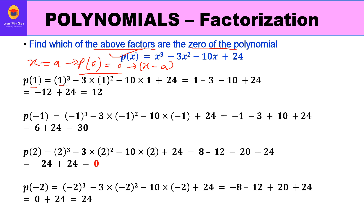Replacing x by 1: 1³ - 3(1²) - 10(1) + 24 = 1 - 3 - 10 + 24 = 12. Not zero. Replacing x by -1: (-1)³ - 3(-1)² - 10(-1) + 24 = -1 - 3 + 10 + 24 = 30. Also not zero.